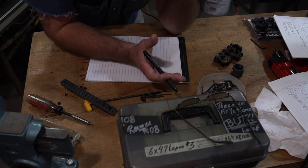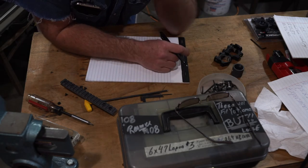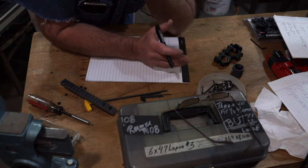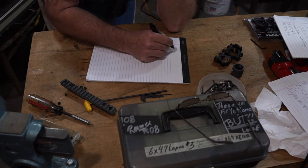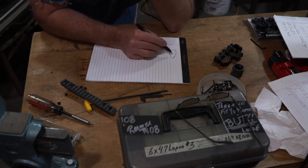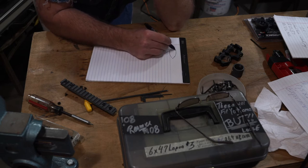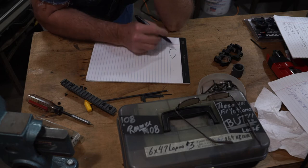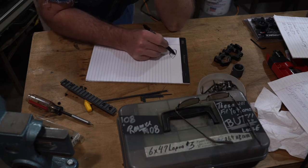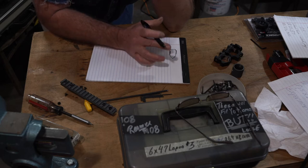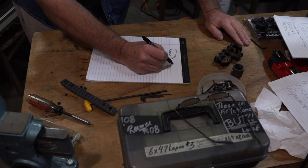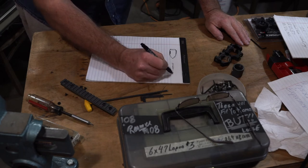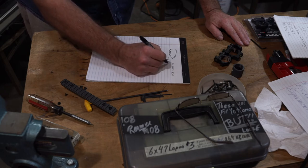Before we start down this road of showing accuracy, I need to be clear that just about any platform out there will shoot short light bullets that are shaped like this quite accurately. This is a typical bench rest profile flat base, although people are starting to add little boat tails to them.